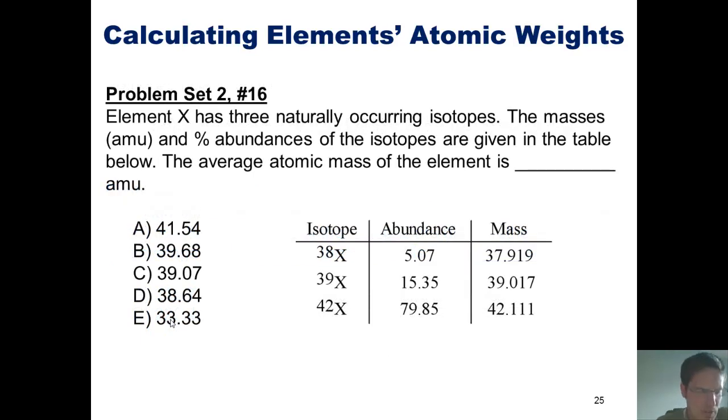Here's another problem for you to try. Element X has three naturally occurring isotopes. The masses in amu and percent abundances of the isotopes are given in the table below. The average atomic mass of the element is blank amu.